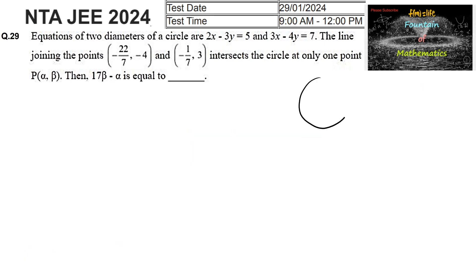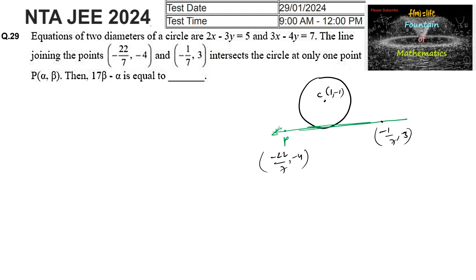We have a circle with center C at (1, minus 1), and the tangent line passing through the two points minus 22/7 comma minus 4 and minus 1/7 comma 3. The tangent equation is 7x minus 3y plus 10 equals 0. We need to find the intersection point P(α, β), which is where the circle touches the tangent.